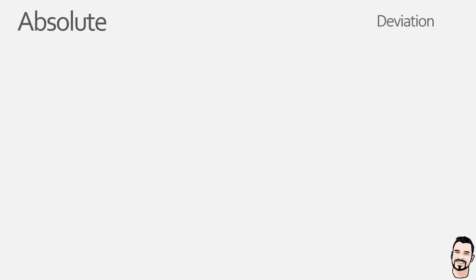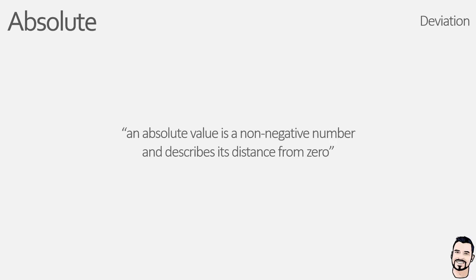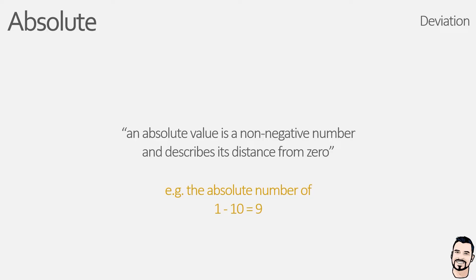The term 'absolute' in this context relates to absolute numbers. Absolute numbers are non-negative numbers — all absolute numbers are positive — and to convert a number to an absolute number we remove the negative prefix. For example, for the equation 1 minus 10, the absolute number answer would be 9: we complete the sum (which gives negative 9) and then convert it to its non-negative equivalent, positive 9. We remove negatives because it allows us to determine how far a number is from zero without the complexity of dealing with direction and negative values.